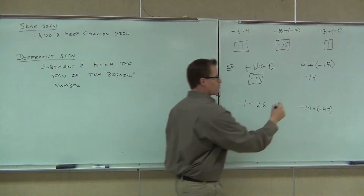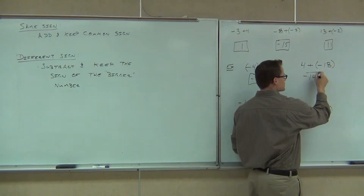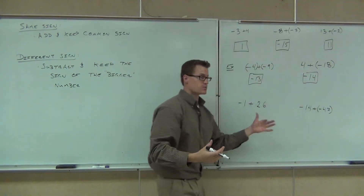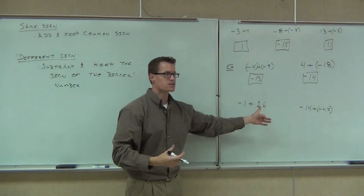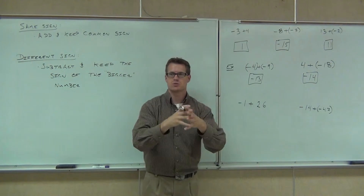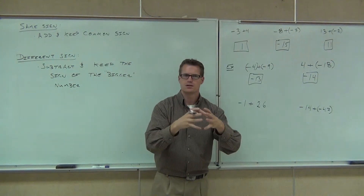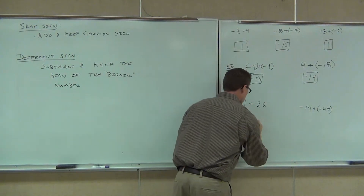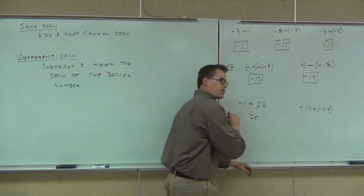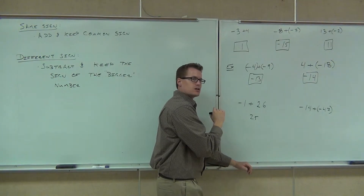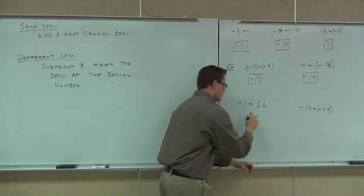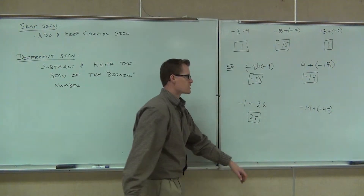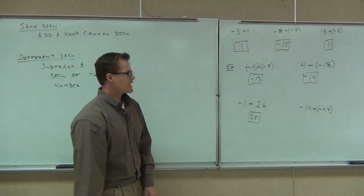Moving on. We've got negative 1 plus 26. We have different signs — a negative and a positive — so that means we'll subtract and get 25. Does it stay positive or change to negative? It stays positive. Perfect. The bigger number was positive.